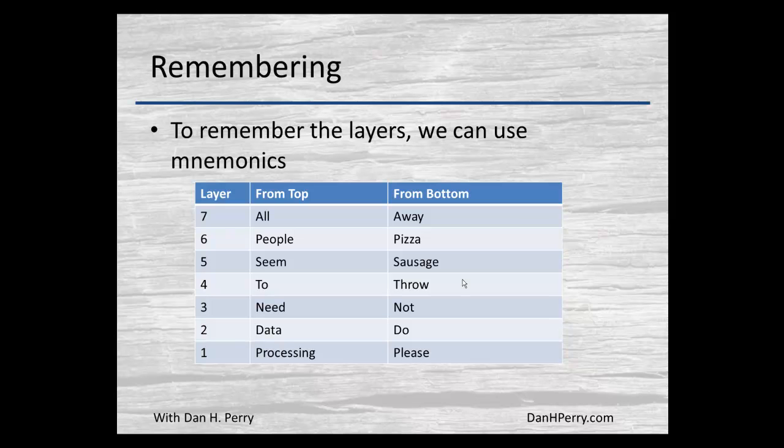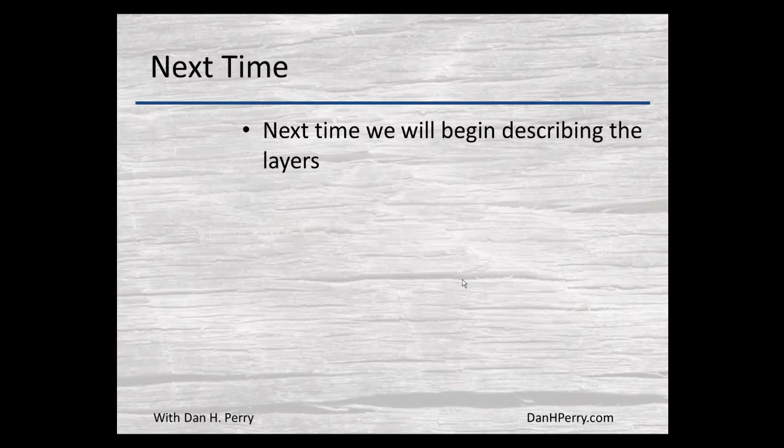Going from the bottom up, starting at layer 1, I like to use the mnemonic 'Please Do Not Throw Sausage Pizza Away.' However you choose to memorize the layers doesn't matter — the important thing is that you know what the layers are and how they relate to each other. Next time, we're going to begin describing these layers.